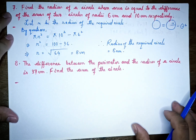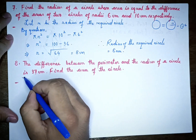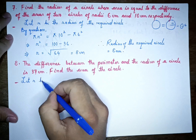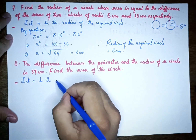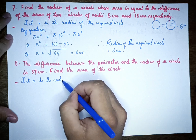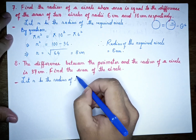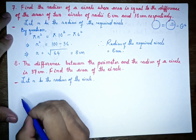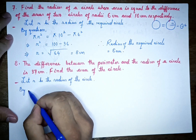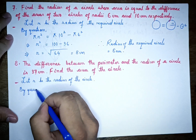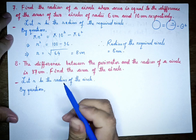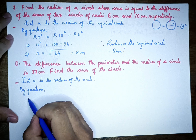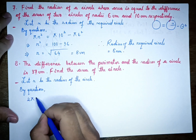Let r be the radius of the circle. The circumference minus the radius of the circle is 37 cm. So we set up the equation: 2πr minus r equals 37.